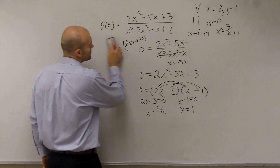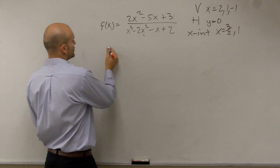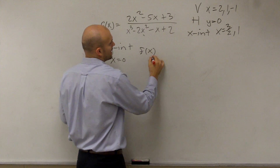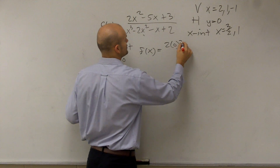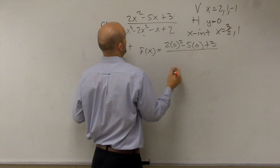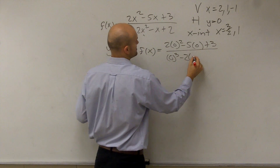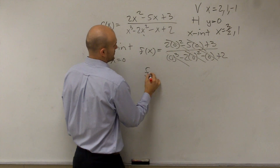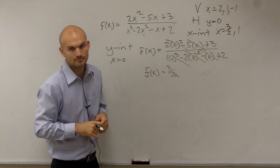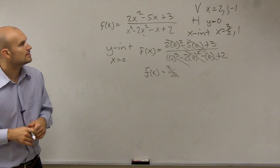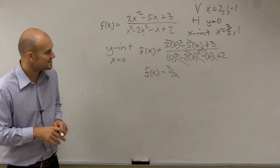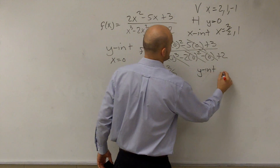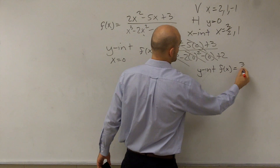The last thing we need to do is determine the y-intercept. The y-intercept is when x equals 0, so we plug in 0 for x: 2 times 0 squared minus 5 times 0 plus 3, all over 0 cubed minus 2 times 0 squared minus 0 plus 2. Everything with x drops out, giving f of 0 equals 3 over 2. So your y-intercept is when f of x equals 3 halves.